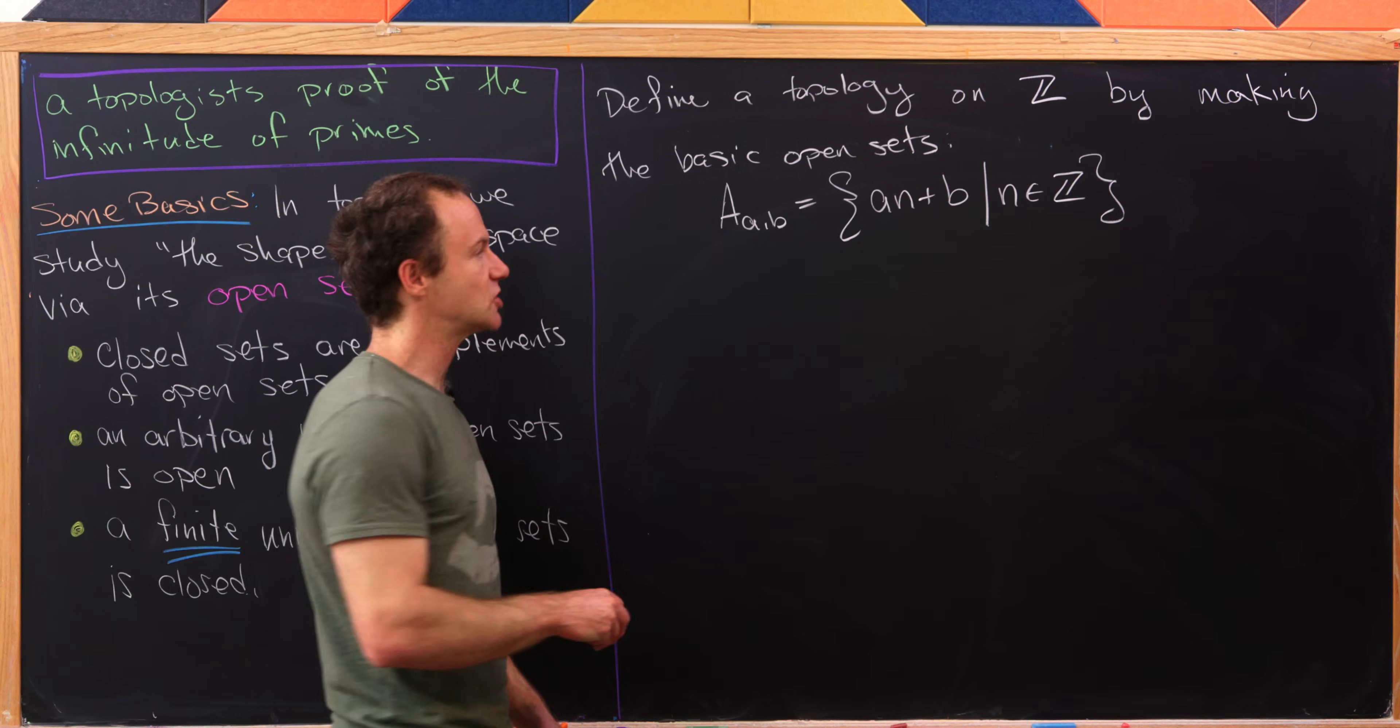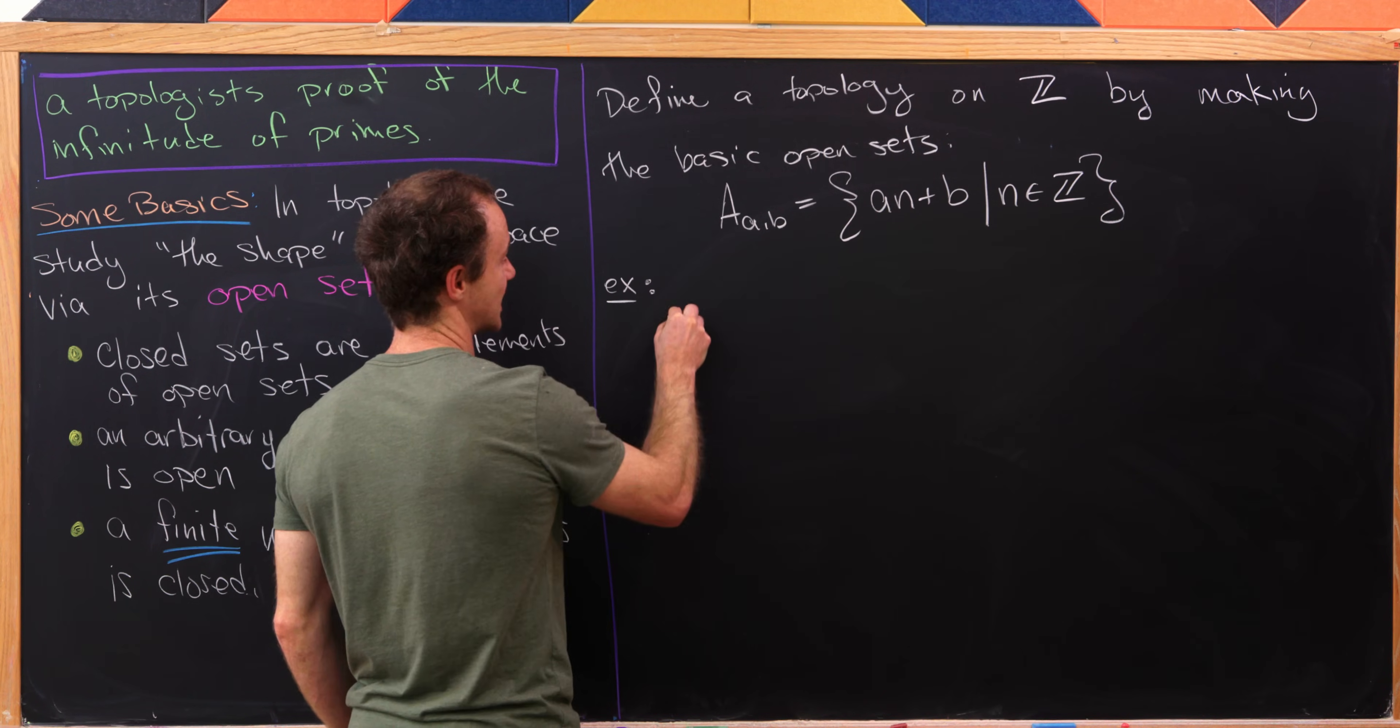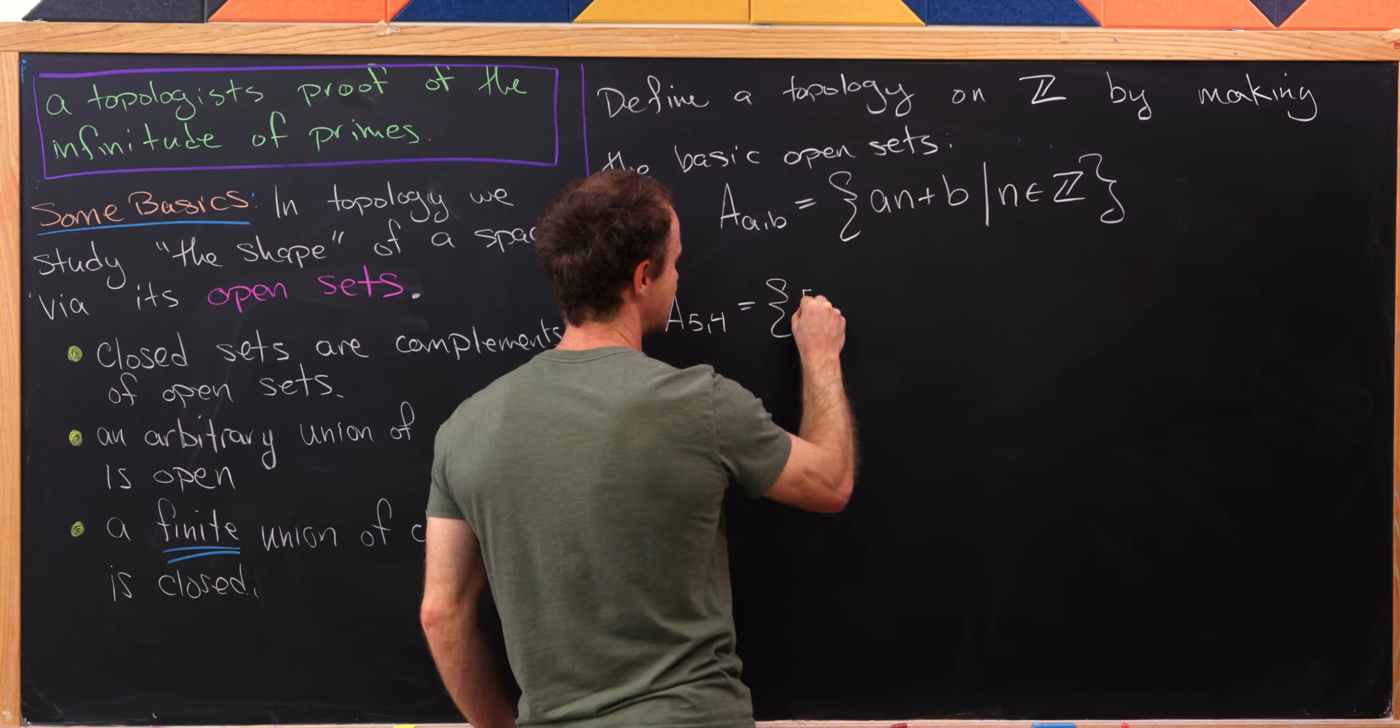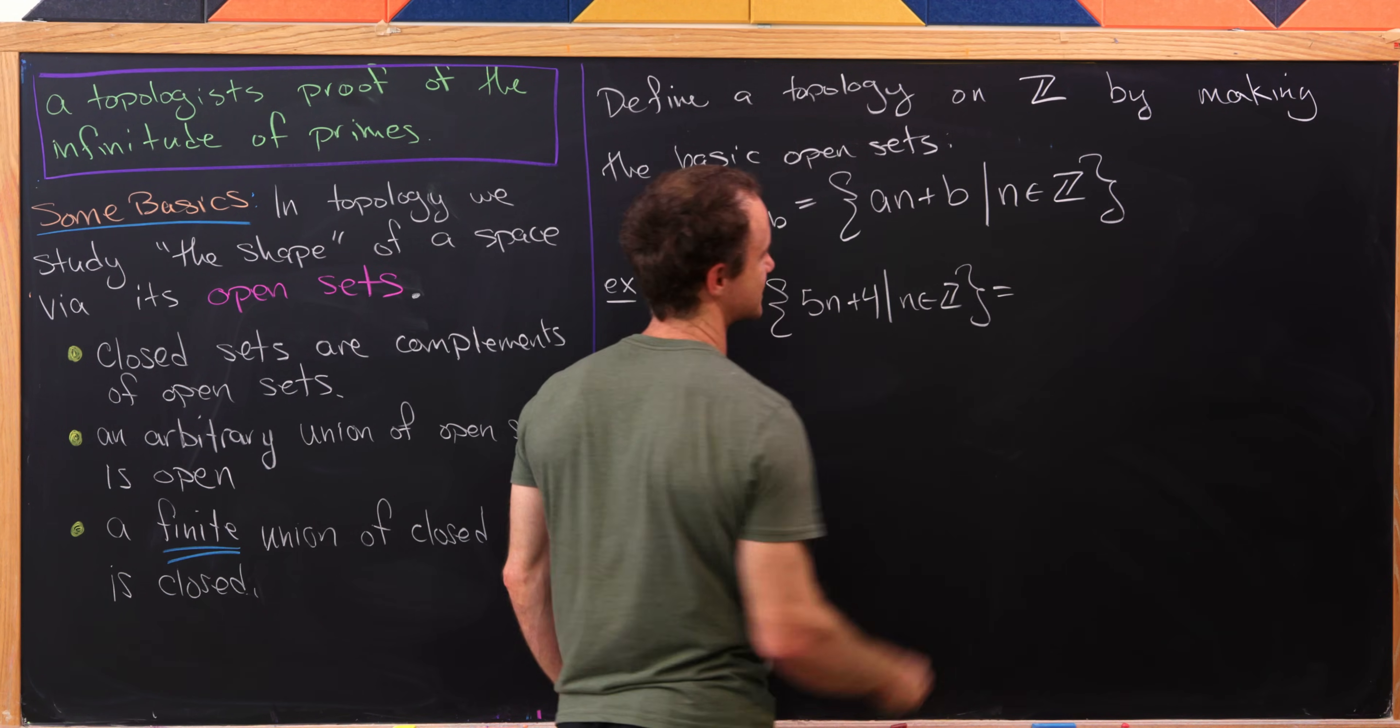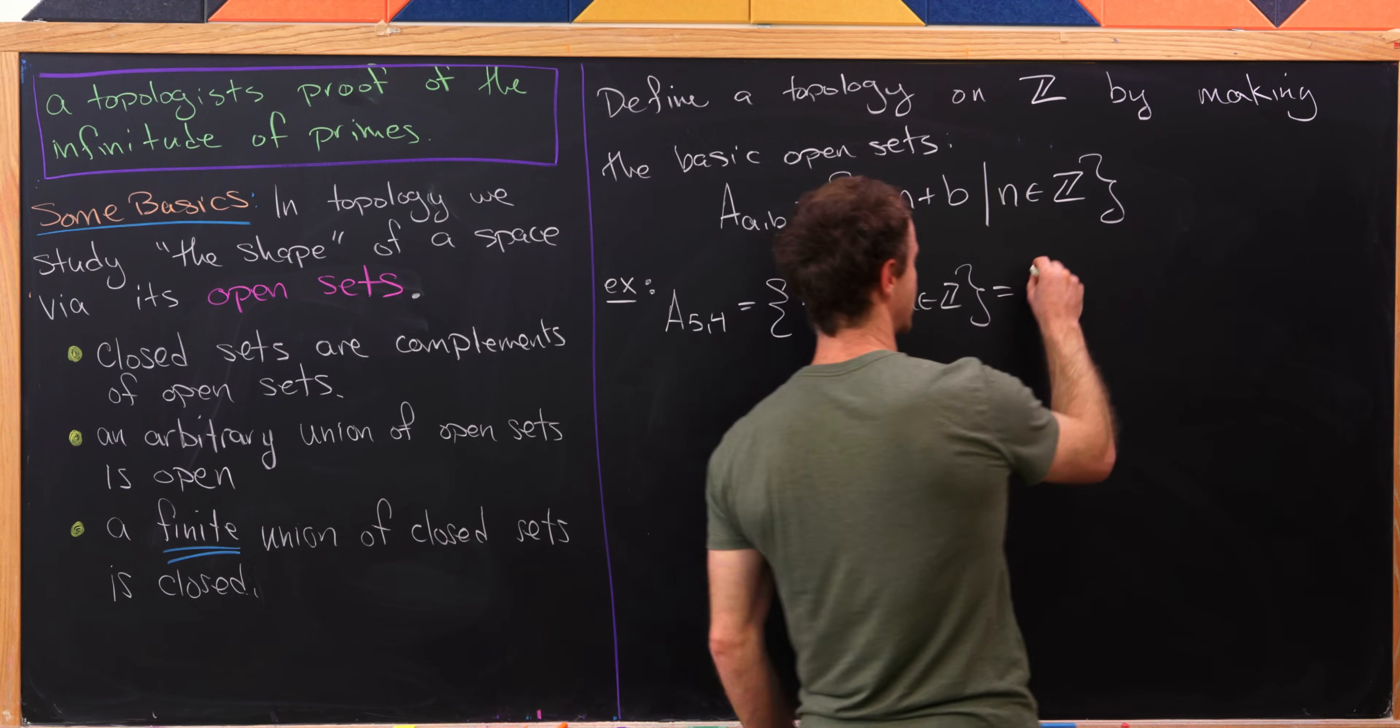Okay. So anyway, let's look at an example of one of these objects. So maybe A sub 5, 4. So that's going to be everything of this form 5n plus 4 as n ranges over all integers. But I could write those out and see what their structure is pretty easily.